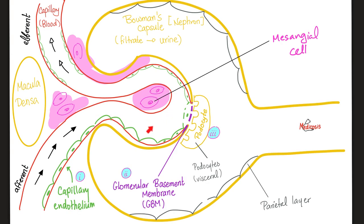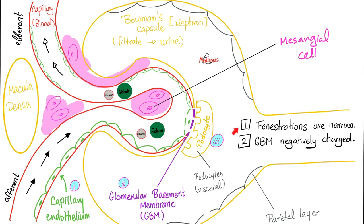In order for plasma to go from the blood vessel to the nephron, it has to pass through three layers: the fenestrated endothelium, the glomerular basement membrane, and the podocytes. Proteins are not filtered normally because they are bigger than the fenestrations of the endothelium, and because proteins are negatively charged — and so is the membrane, since the phospholipid membrane carries negative phosphate charges.